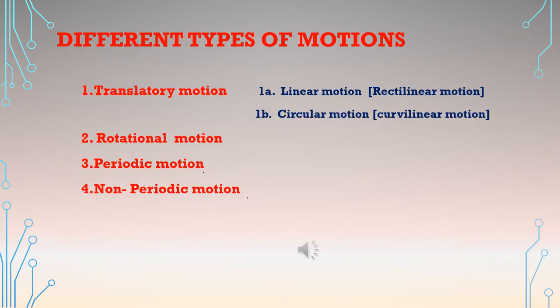To summarize: translatory motion is of two types — linear motion and circular motion; linear motion is also called rectilinear motion, and circular motion is also called curvilinear motion. The second type is rotational motion, the third is periodic motion, and the fourth is non-periodic motion.